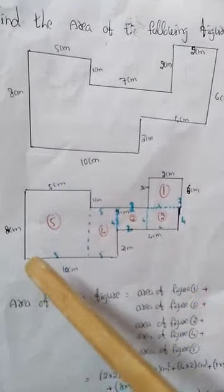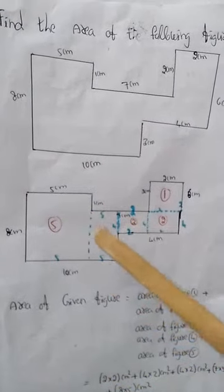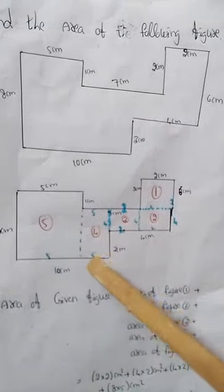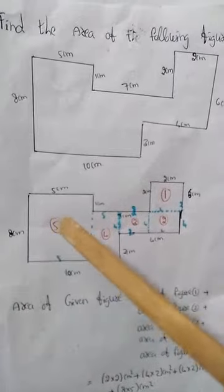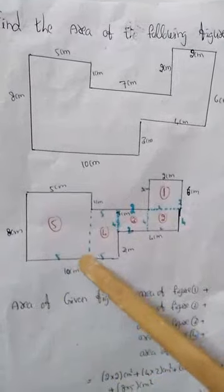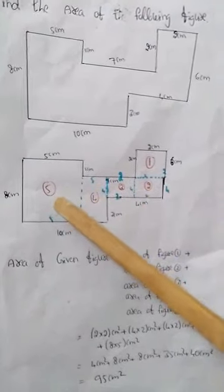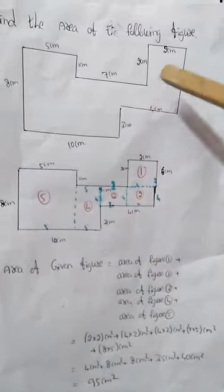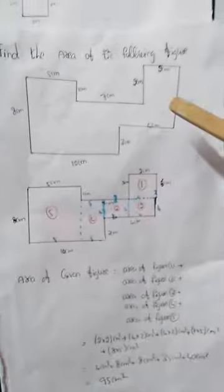Figure 5: one side is eight centimeters, the other side is five centimeters. The base is ten centimeters; up to here five, remaining will be five. So Figure 4 has sides seven and five, and Figure 5 has sides eight and five centimeters. Now, to find the area of the total figure, just add the areas of all figures: area of Figure 1 plus area of Figure 2 plus area of Figure 3 plus area of Figure 4 plus area of Figure 5 equals the area of the given figure.